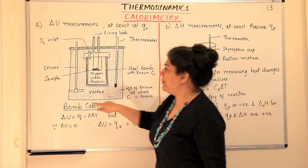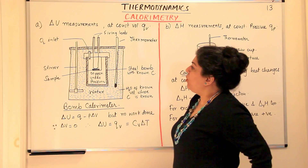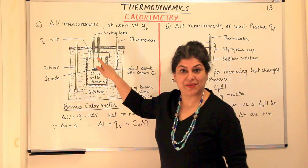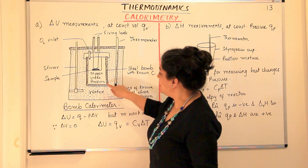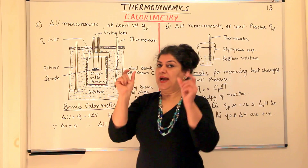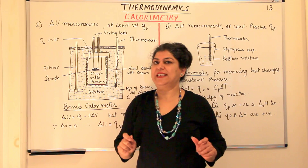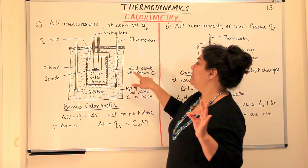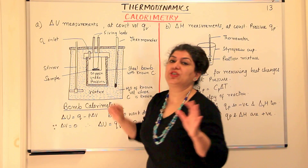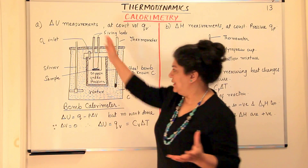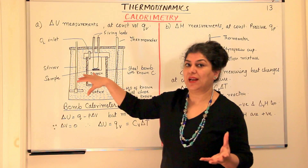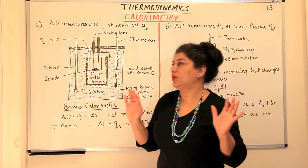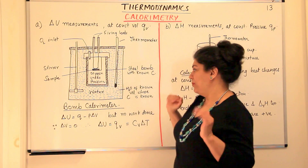The apparatus used for constant-volume calorimetry is known as the bomb calorimeter. It consists of a metallic steel container with a thick steel sheet, and the heat capacity of the steel is known. This steel container is actually called the bomb. The entire apparatus is known as the calorimeter, but this inner steel vessel is called the bomb — hence the name bomb calorimeter.